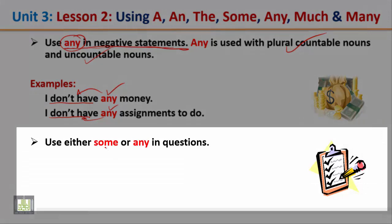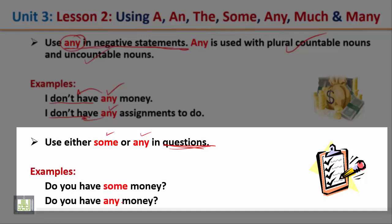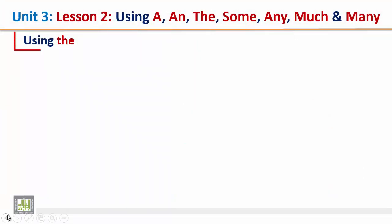Use either some or any in questions. Examples: do you have some money? This is a question — we start with the verb. We can also say: do you have any money? So in questions, you can use either some or any.